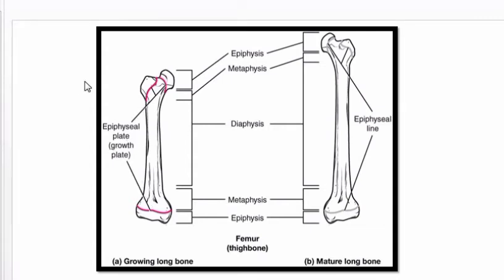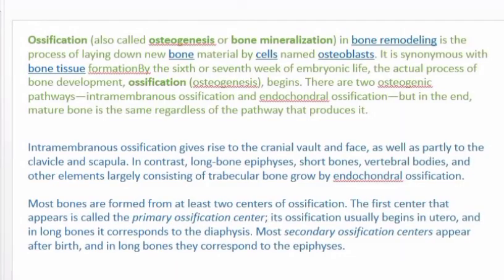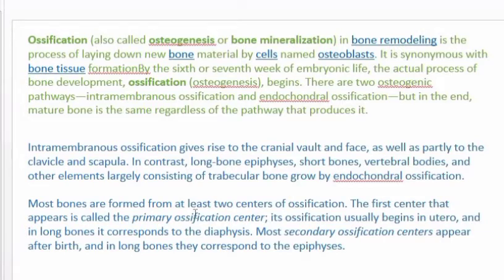Ossification is the bone remodeling process in which new bone material is laid down by cells called osteoblasts - it is essentially the formation of bone. Bone formation starts from the sixth or seventh week of intrauterine life. Two pathways exist: intramembranous ossification, which gives rise to the cranial vault, face, clavicle, and scapula, and endochondral ossification, which applies to all other bones. For ossification to occur there must be ossification centers.